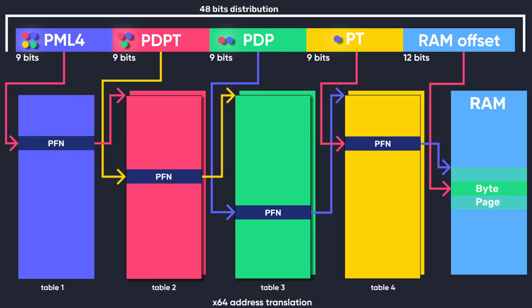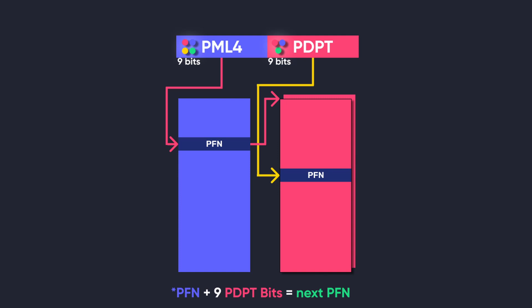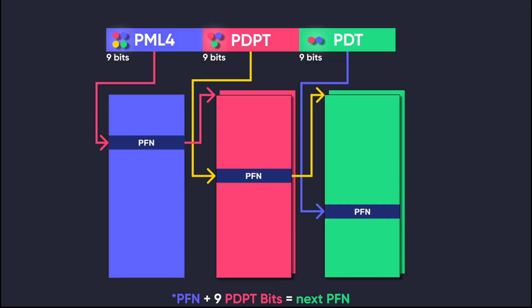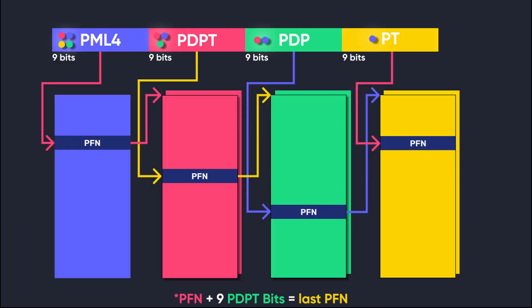Let us start by looking at the translation of the first 9 bits. The leftmost 9 bits act as an offset into the PML4 table, whose address is stored in a special register. At this offset, the entry contains a page frame number which points to the start of the next table. The next 9 bits act as an offset which, when added to the PFN, points to the next PFN. The same then happens with the next 9 bits, which point to the page directory table and then finally into the page table.